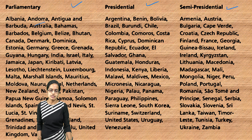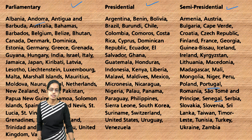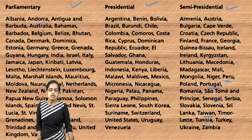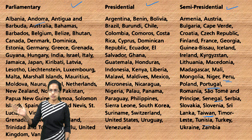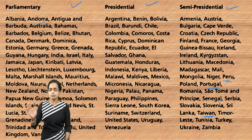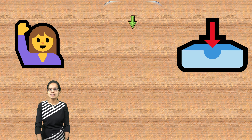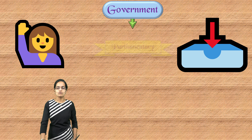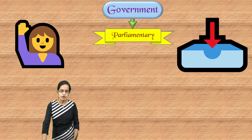Some of them are really good examples. For instance, in the semi-presidential category, we have Portugal, Peru, Senegal, and Taiwan as good examples. The same goes for the other presidential and parliamentary forms of government. Now let's understand these forms one by one.